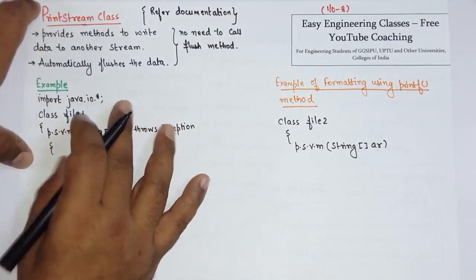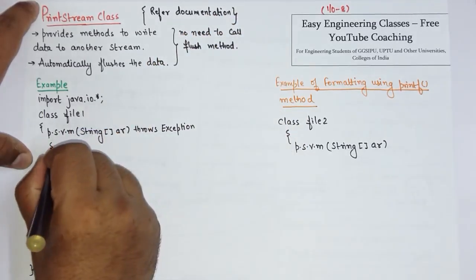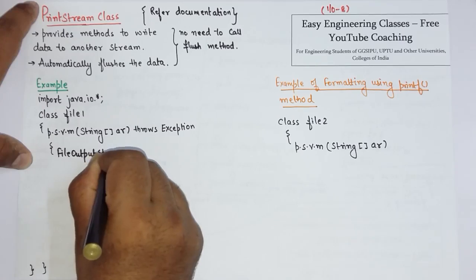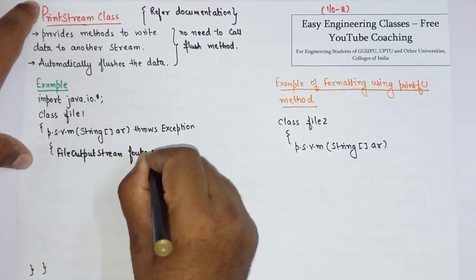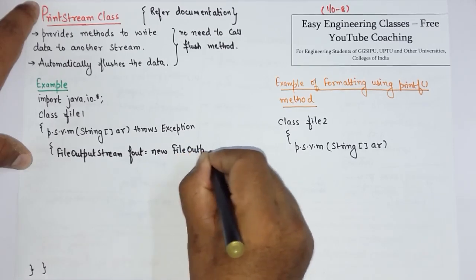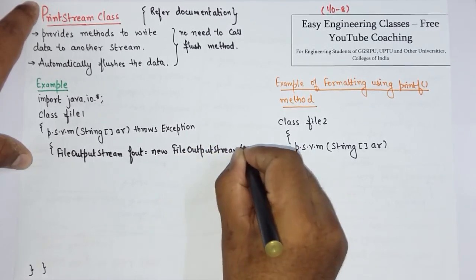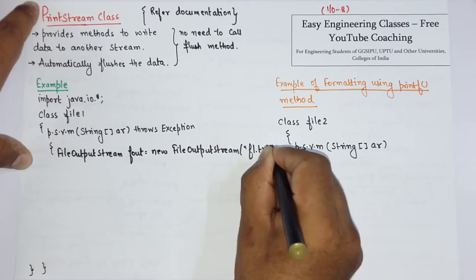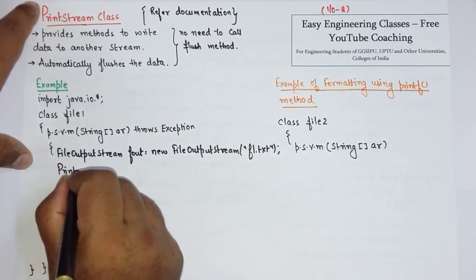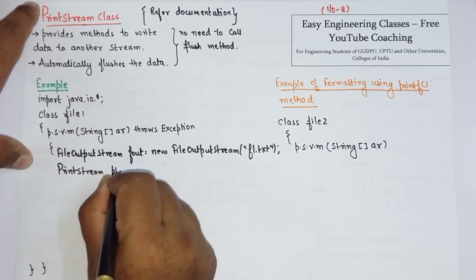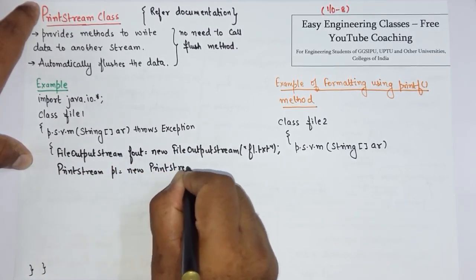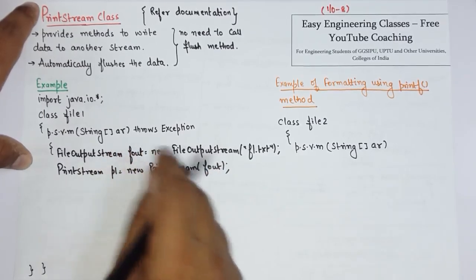The structure is already created. To write the content, I have to create an object of FileOutputStream. Here I am creating a FileOutputStream object: fout = new FileOutputStream. Suppose I have to write to the f1.txt file. Then create one object of PrintStream class: p1 = new PrintStream, and associate the fout object with the PrintStream class.